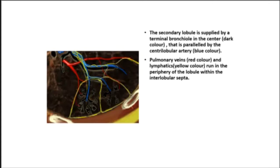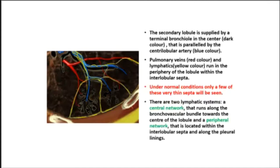Pulmonary veins and lymphatics run in the periphery of the lobule within the interlobular septa. Under normal conditions, only a few of these very thin septa will be seen. There are two lymphatic systems: a central network running along the bronchovascular bundle toward the center of the lobule, and a peripheral network located within the interlobular septa and along the pleural linings.